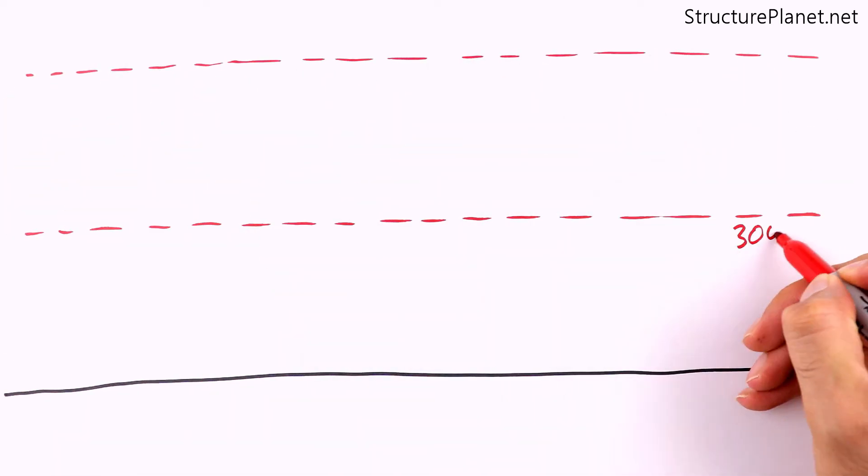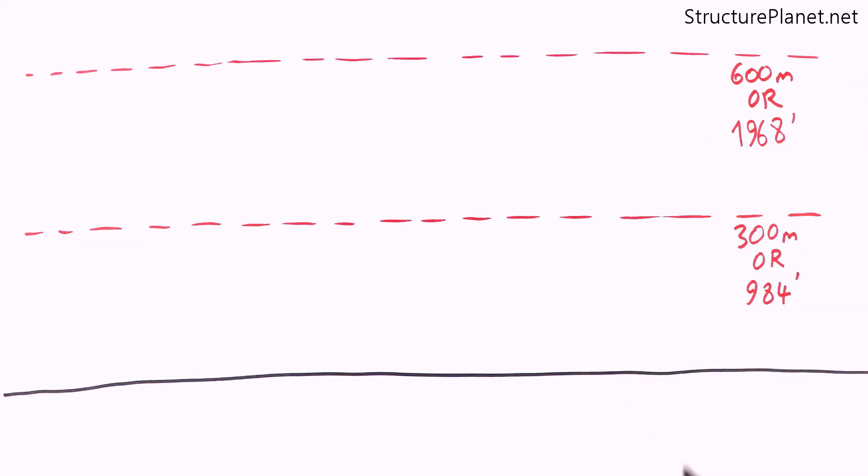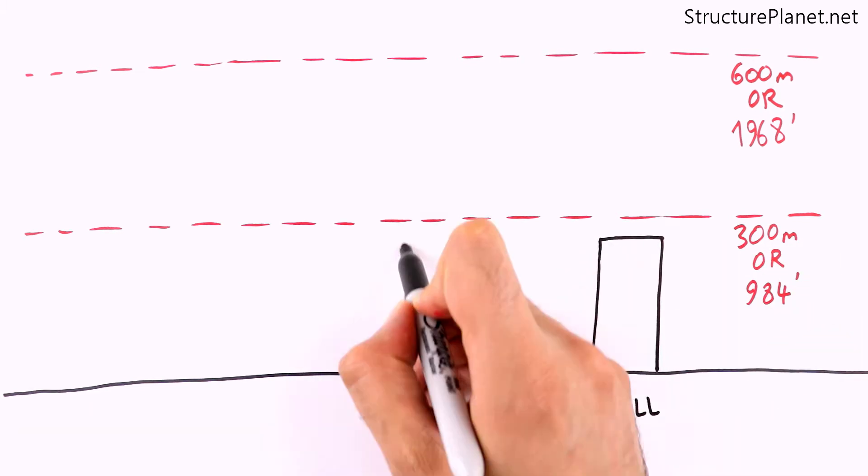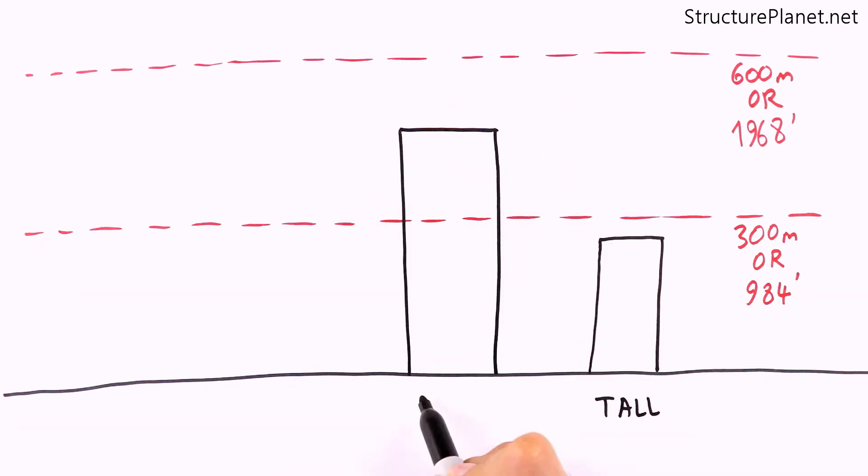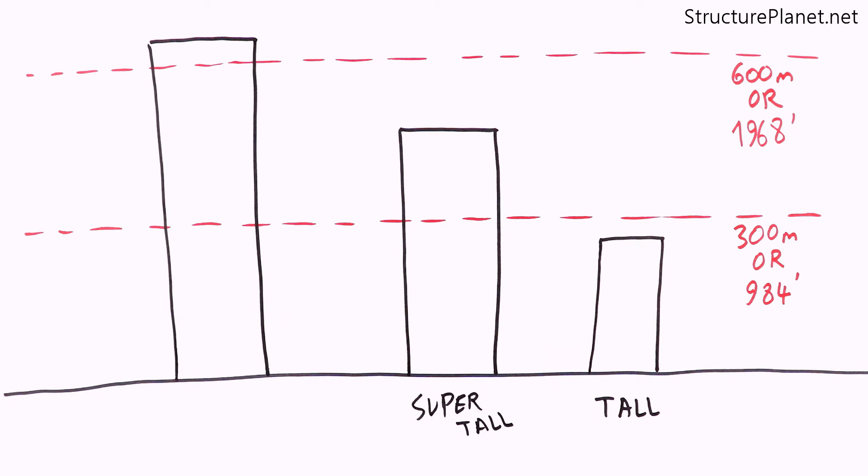By the current definition from the Council of Tall Buildings and Urban Habitat, or CTBUH, buildings taller than 300 meters or 984 feet are called super tall, and those higher than 600 meters or 1,968 feet are called mega tall. In this video we will talk about some of the major items that structural engineers consider in the design of the tallest skyscrapers in the world.